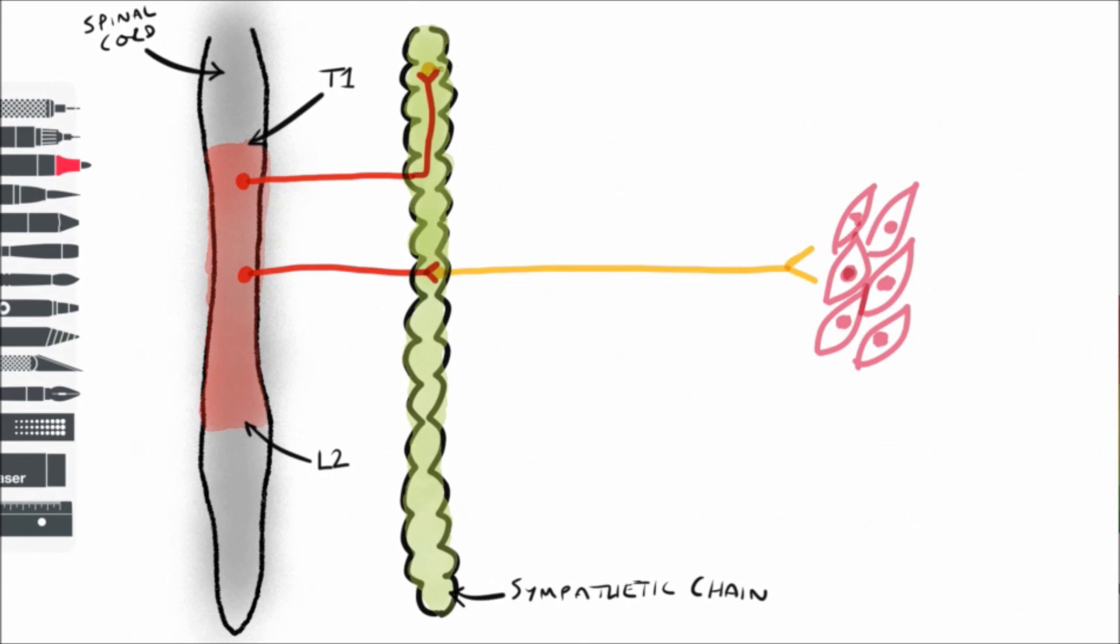Importantly, some preganglionic fibers will ascend through the sympathetic chain before synapsing, where others will descend. This way the sympathetic outflow, which remember is only occurring between T1 and L2, can actually be distributed up to the head and neck, out to the upper and lower limbs, and down to the pelvic organs.